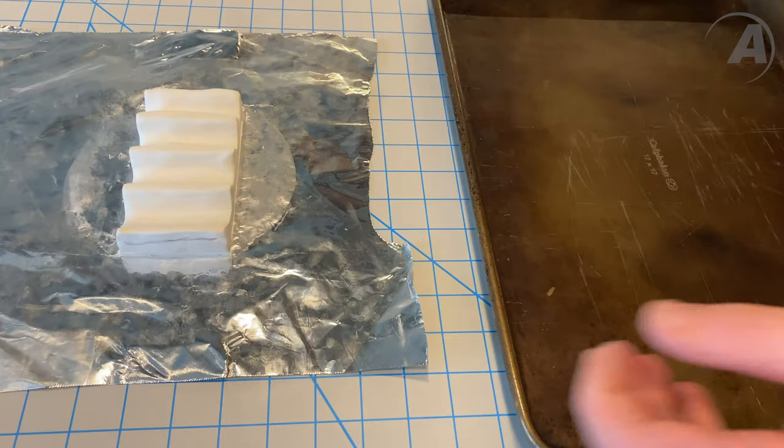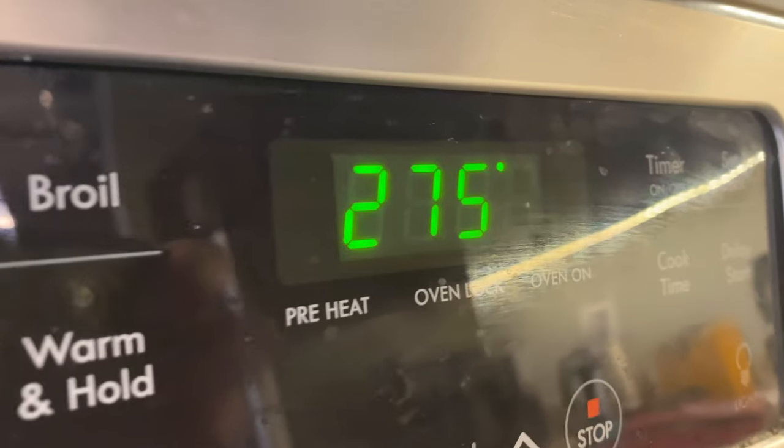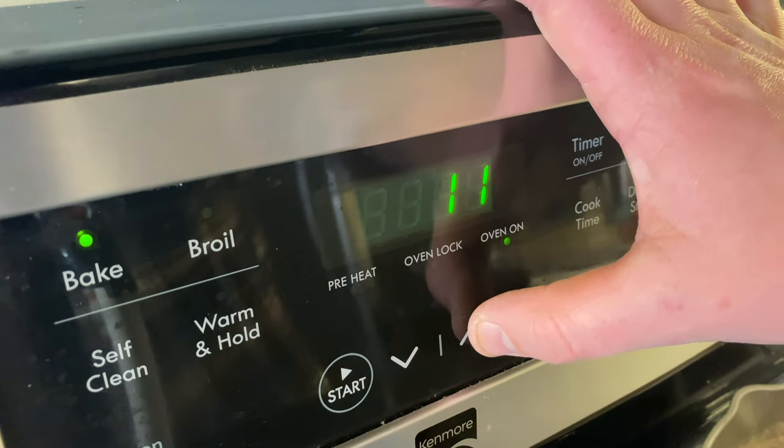Since I formed this on top of that foil, all I have to do is slide it onto my baking sheet, pop it into the oven at 275 degrees, and let it cook for 15 minutes per quarter inch of material.